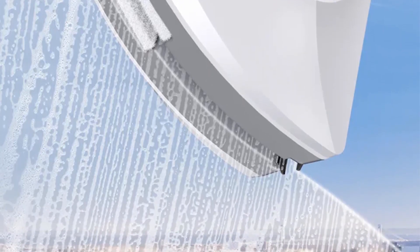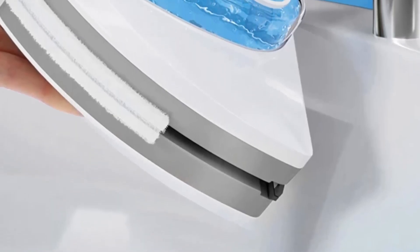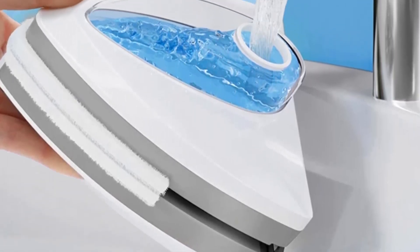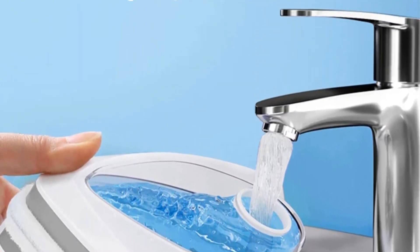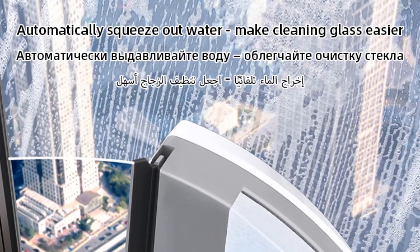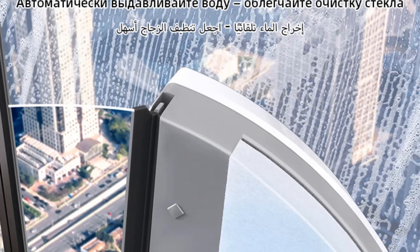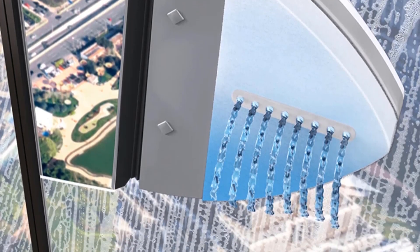This cleaning device is particularly beneficial for those who struggle with reaching or accessing windows from the outside. The magnetic connection between the two cleaning pads ensures stability and ease of movement across the glass surface. Users can operate the device from the inside, while the outer part adheres to the window exterior, simplifying the cleaning process for hard-to-reach areas.